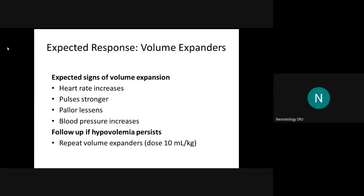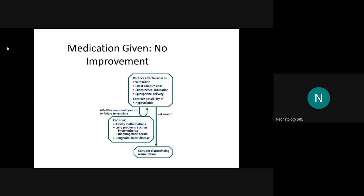After medication is given with no improvement, check the effectiveness of ventilation, chest compressions, endotracheal intubation, epinephrine delivery, and consider hypovolemia. If the heart rate is still less than 60, there are persistent arrhythmias, or the baby cannot be ventilated, consider airway malformations, lung problems such as pneumothorax or diaphragmatic hernia, and congenital heart disease. In these situations, consider discontinuing resuscitation.